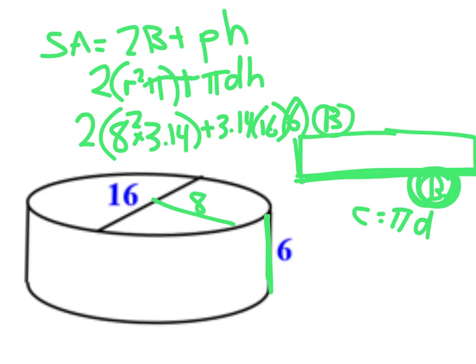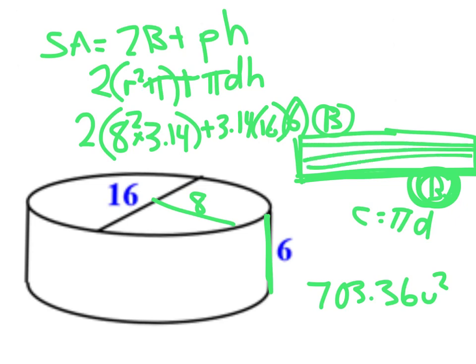Now it's just a matter of working all of that out, typing that all into my calculator. If you do that, you get 703.36 units squared. That would be enough squares to cover this whole thing and all of the two circles.